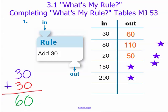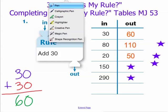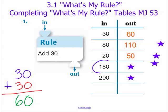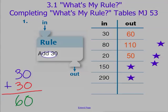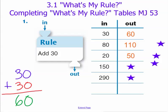Take a look at the next two sets of inputs — 150 and 290 — and see if you can solve these on your own. Taking a look at 150, when we apply our rule to it to add 30, our output becomes 180. Lastly, when 290 is our input and we add 30 to it, our final output becomes 320.